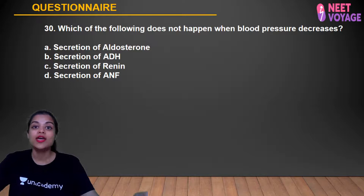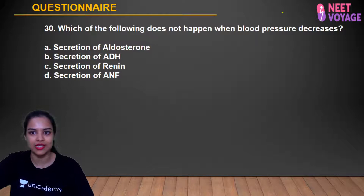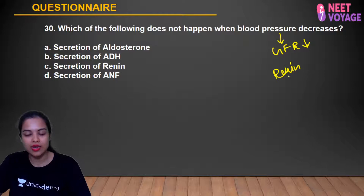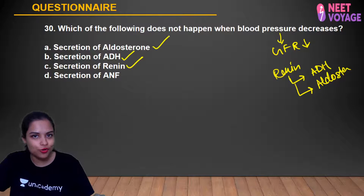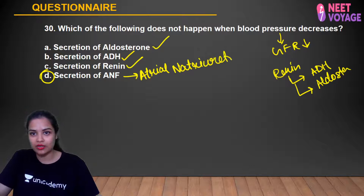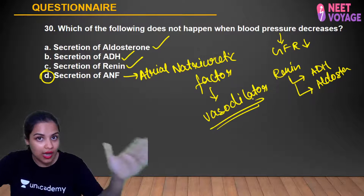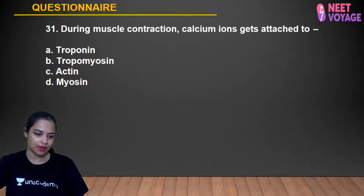Question 30: Which does NOT happen when blood pressure decreases? When BP decreases, GFR decreases → renin is released → renin triggers release of ADH and aldosterone (all to increase BP). ANF (Atrial Natriuretic Factor) is released by the atrial wall — it is a vasodilator that LOWERS blood pressure. So when BP is low, ANF would NOT be released. ANF is the answer. Kamal, Samreen, Tanusha, Anshika, Sabah, Alok, Shashank, and Simran gave the correct answer.